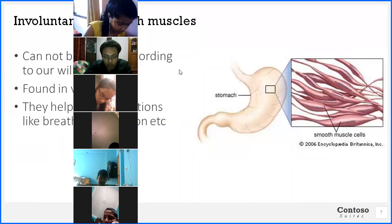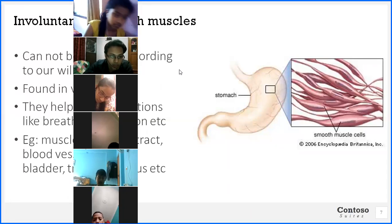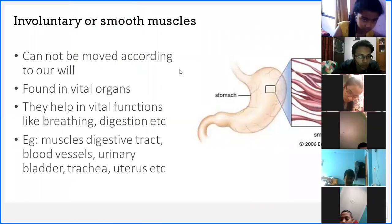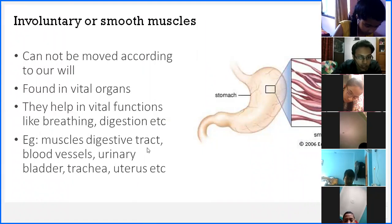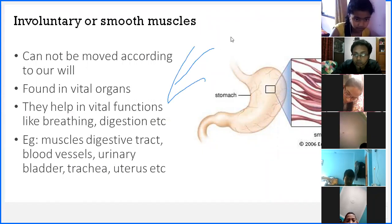Examples of involuntary muscles include the muscles of the digestive tract, blood vessels, urinary bladder, and trachea.